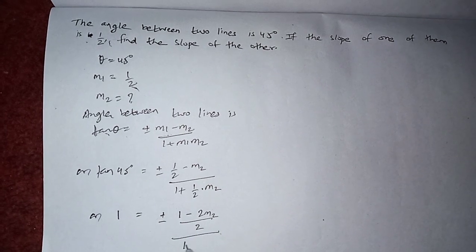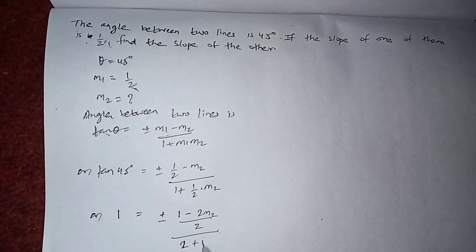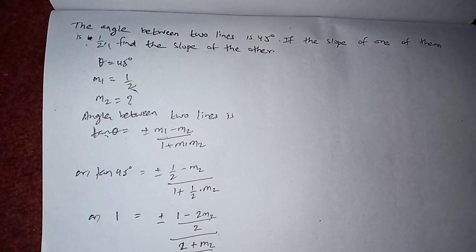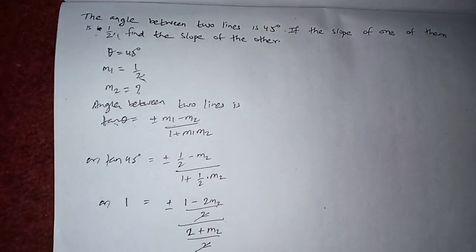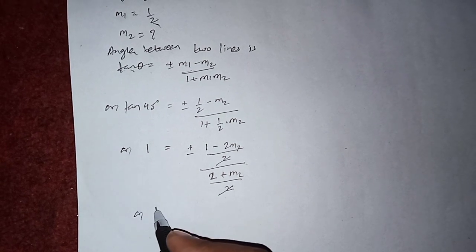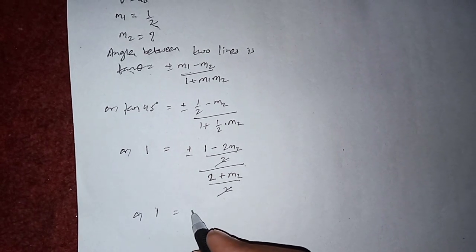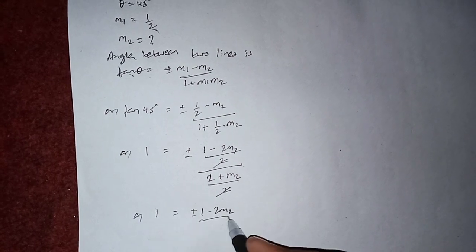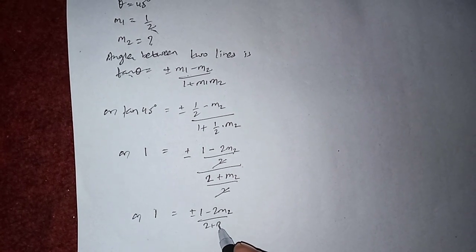Here also we can take the LCM. It will be (2 plus m2) by 2. Two and two we can cancel, so 1 equals plus minus (1 minus 2m2) by (2 plus m2).